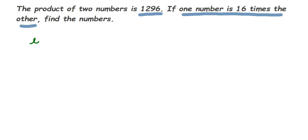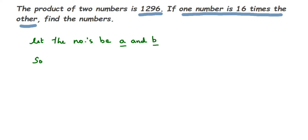Since we don't know the numbers, we're going to assume the numbers are variables. You can take any variable — x, y, b, q. Here I'm taking the numbers to be a and b. They have given a relationship that the first number is 16 times the other number.